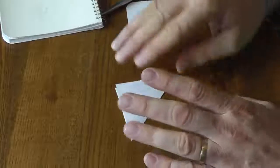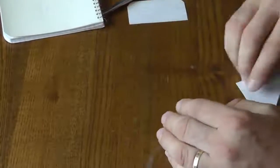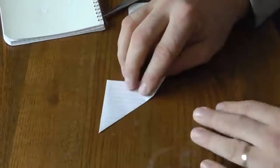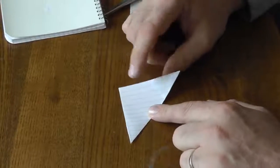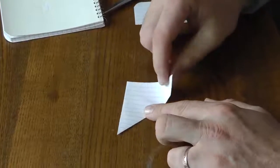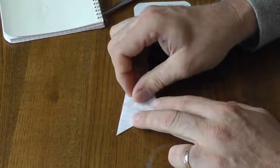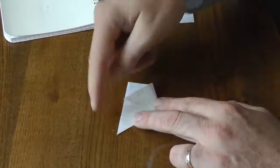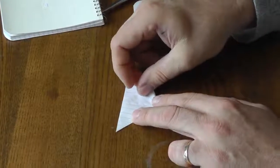Now what you do is take one of these corners here and bring it all the way over about midway on this side here. Just like that.